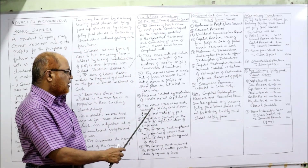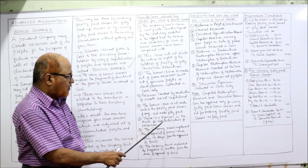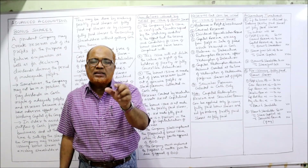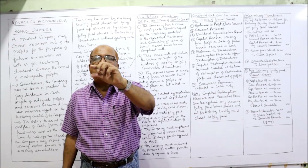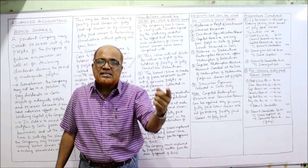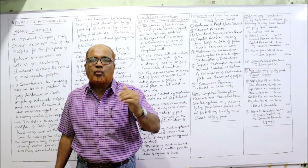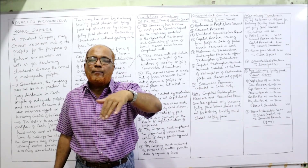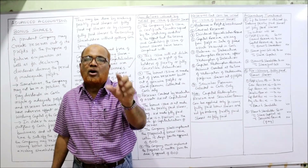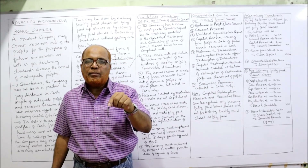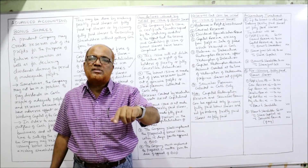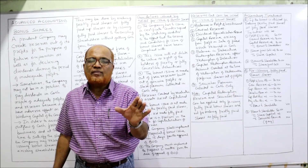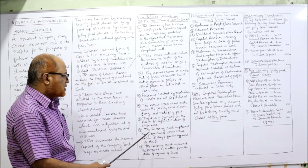There must be a provision in the articles of association for capitalization of reserves. In the articles of association, there should be a clause that the company can capitalize its profits by declaring bonus. If this clause is not there, the company must amend the articles of association and add that clause. If it is not there in the articles of association, the company cannot issue bonus shares.